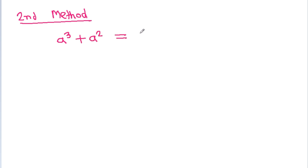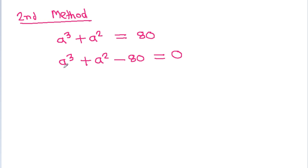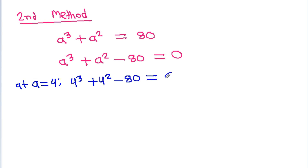For the second method, we have a³ minus a² minus 48 equals 0. Testing a = 4: 4³ minus 4² minus 80... wait, that is 64 plus 16 minus 80, which equals 80 minus 80 = 0. So a = 4 is a solution, and therefore (a minus 4) is a factor.